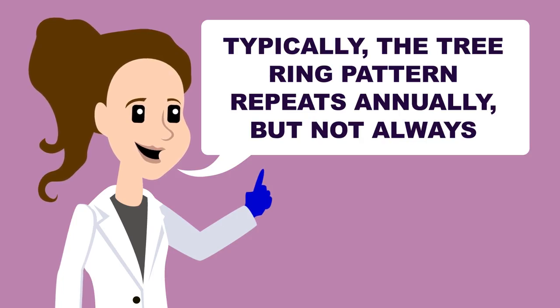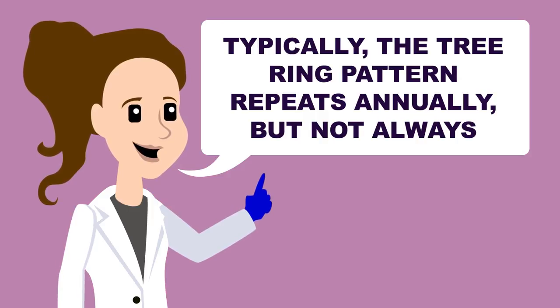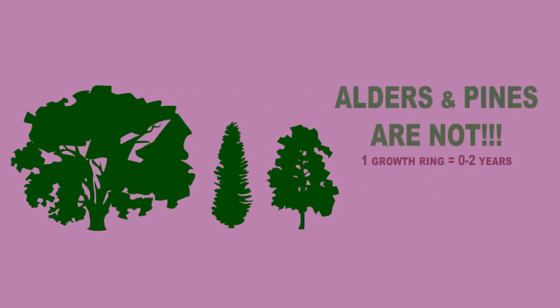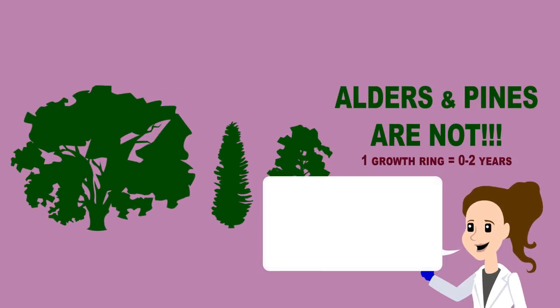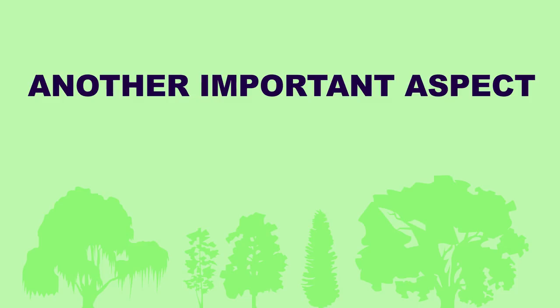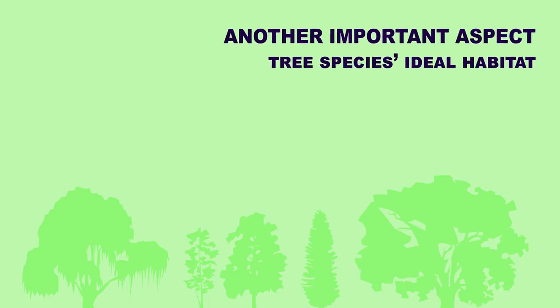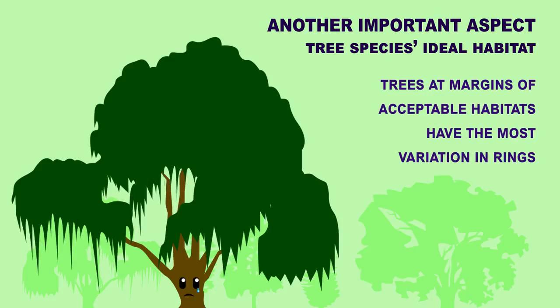Typically, the tree ring pattern repeats annually, but not always. For instance, while oak trees are extremely reliable, alders and pines are not. Meanwhile, trees in tropical regions sometimes don't even have rings to begin with. An additional aspect considered in dendrochronology is a particular tree species' ideal habitat. Generally, trees living on the margins of their acceptable habitats will have the most variation in their rings, making it easier to make deductions about their local environment.